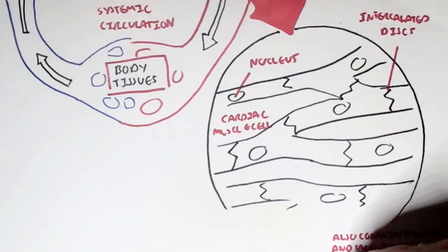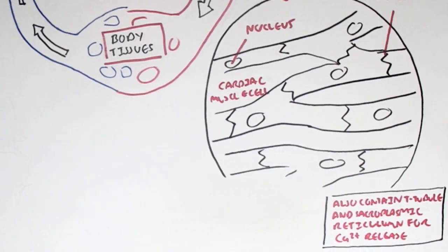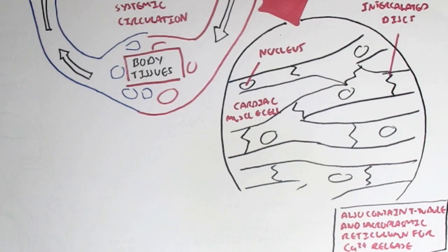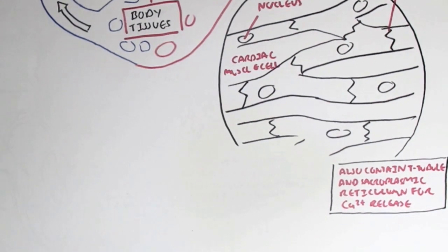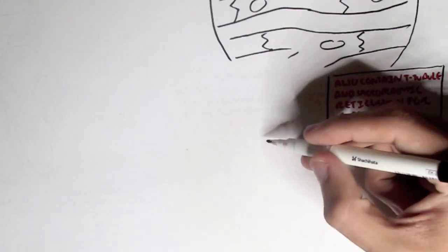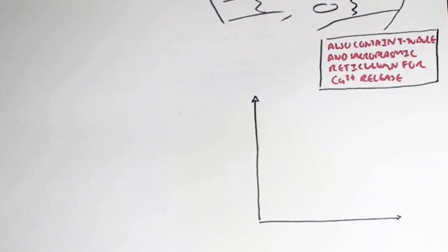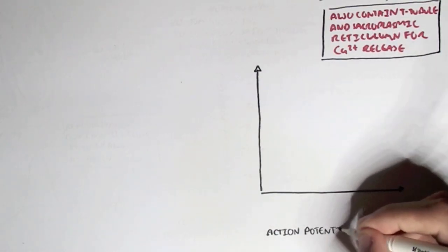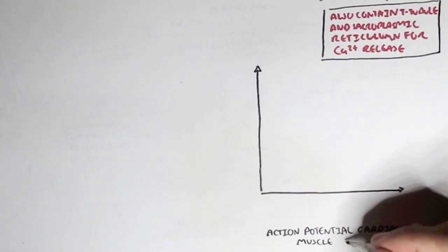Also, cardiac muscle cells contain T-tubules and sarcoplasmic reticulum for calcium release. Calcium, as we know, is very important for muscle contraction. We know that cardiac muscle cells contract in response to an action potential. So let's look at the action potential of a cardiac muscle cell in the ventricle. But before we look at an action potential, we have to understand a membrane potential and how an action potential changes a membrane potential.